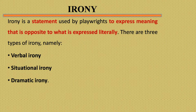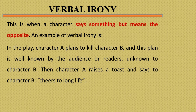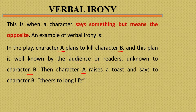The next figure of speech is irony. Irony is a statement used by playwrights to express meaning opposite from the literal meaning of a word. We have three types: verbal irony, situational irony, and dramatic irony. Verbal irony is when a person says something opposite of what he or she means. For example, in a play, character A plans to kill character B, known to the audience but not to character B. Character A raises a toast and says 'Cheers to long life,' but means 'Cheers to your death.'